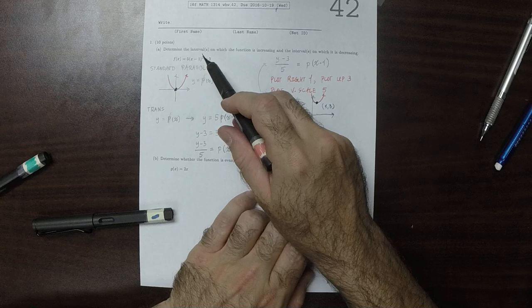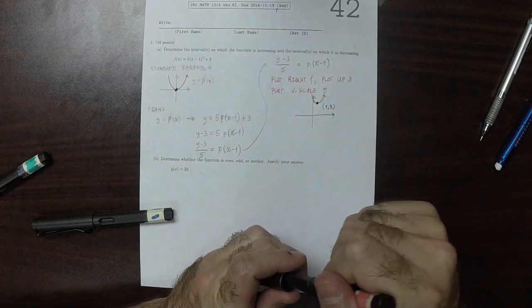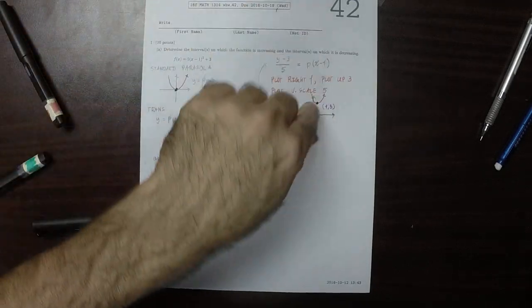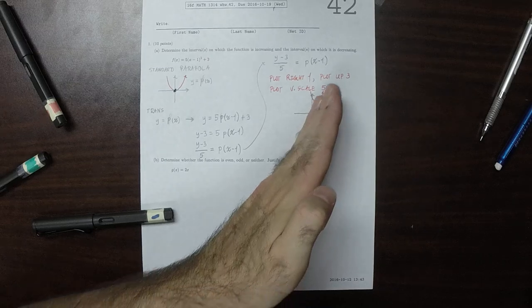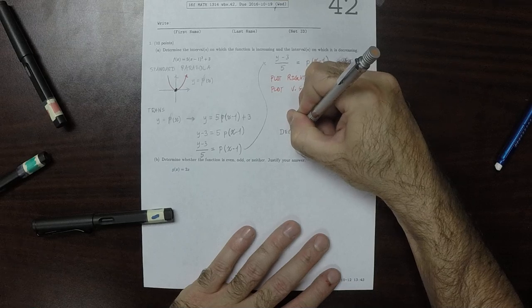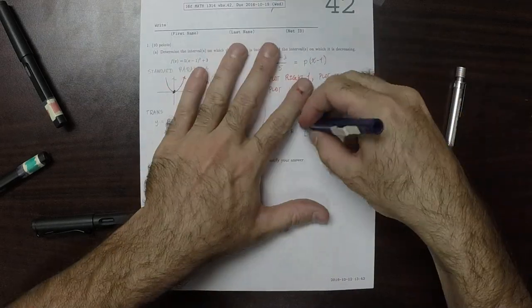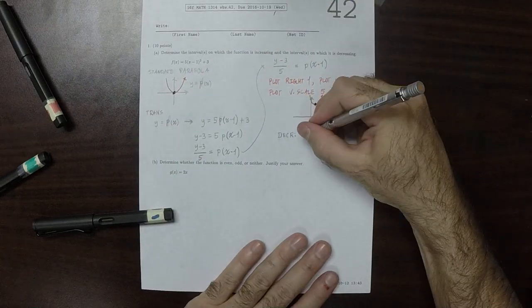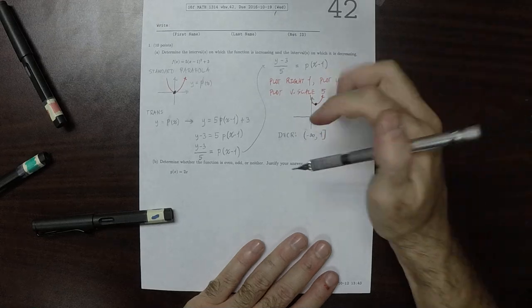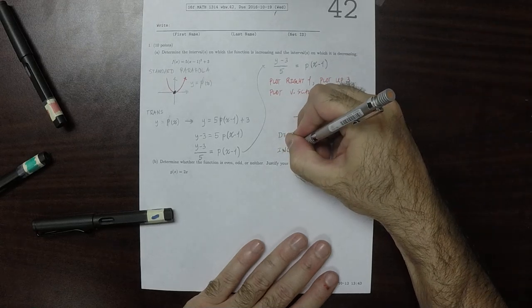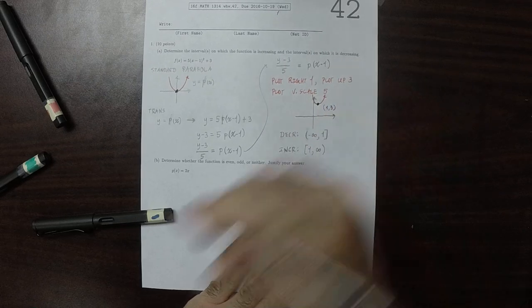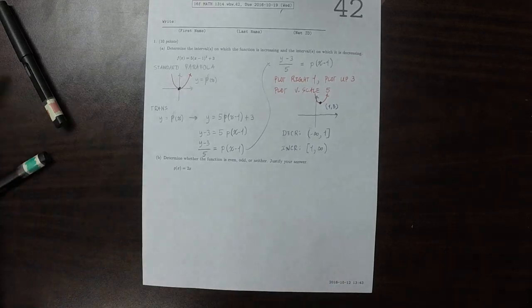But all that matters in this question is where is it increasing and where is it decreasing. So this parabola here is going to decrease from negative infinity to x is 1 and then increase from 1 to infinity. So it's going to decrease from negative infinity to 1 and then it's going to increase from 1 to infinity.